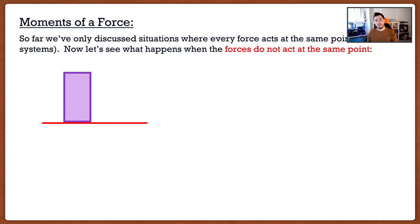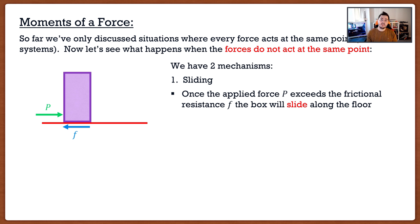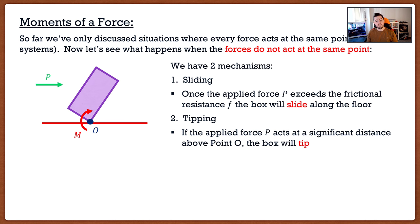The best way to show that is through an example with a box. If I were to take my box and apply a force at the very bottom, we actually have two mechanisms. The first is sliding — there's a frictional force that will counteract any movement. If my applied force exceeds the frictional force, the box is going to start to slide. Now if I were to take that force and start moving it up the box, we are introduced to our second mechanism: tipping. If the applied force P starts to act at a significant distance above, the box is going to tip about a very specific point — point O.